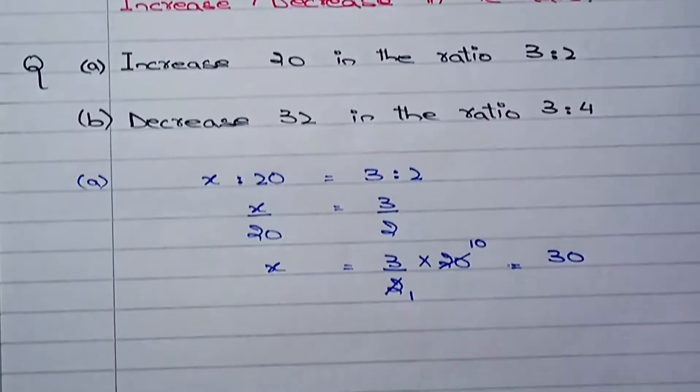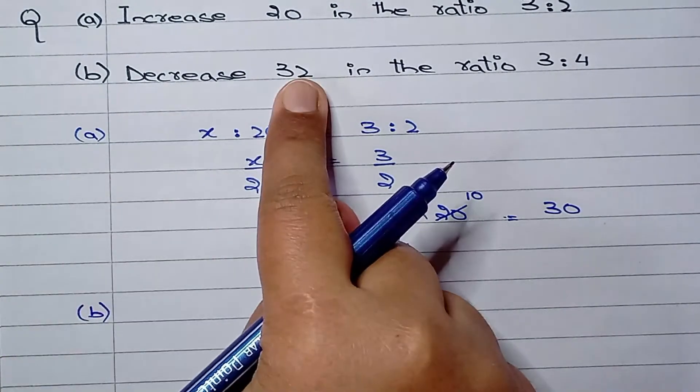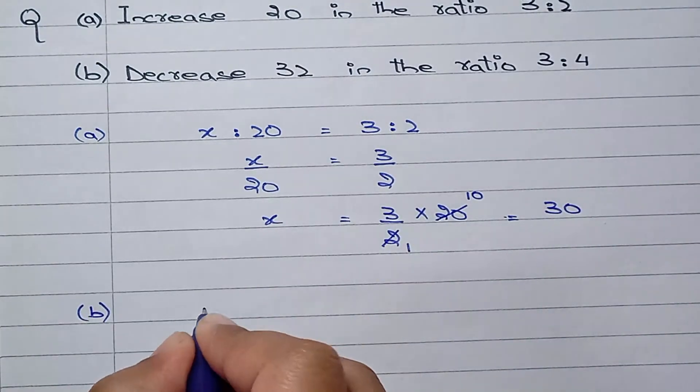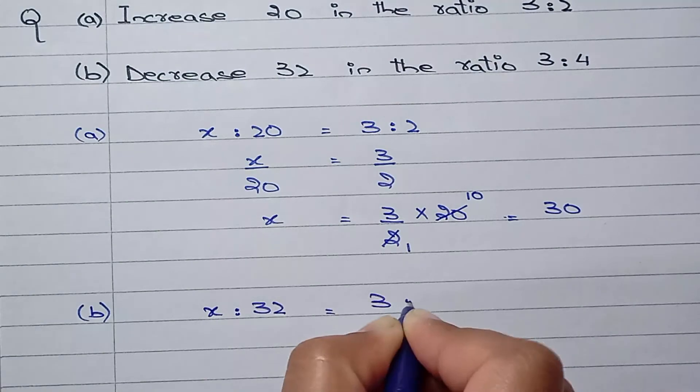Now on the same steps we can do for the b part when we have given the question for decrease of some quantity in the ratio. So we can say x:32 equals 3:4.